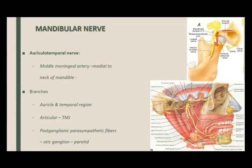The auriculotemporal nerve carries post-ganglionic parasympathetic fibres that relay in the otic ganglion and are for the supply of the parotid gland. However, the trigeminal nerve itself carries no parasympathetic fibres — these parasympathetic fibres come from the ninth cranial nerve, the glossopharyngeal nerve. They are just hitchhiking fibres in the trigeminal. The auriculotemporal nerve also gives articular branches to the TMJ, since it passes close to it.